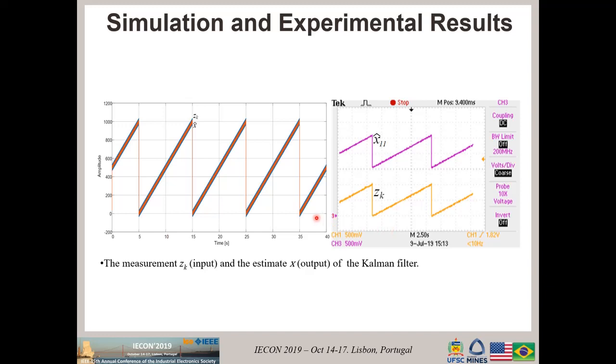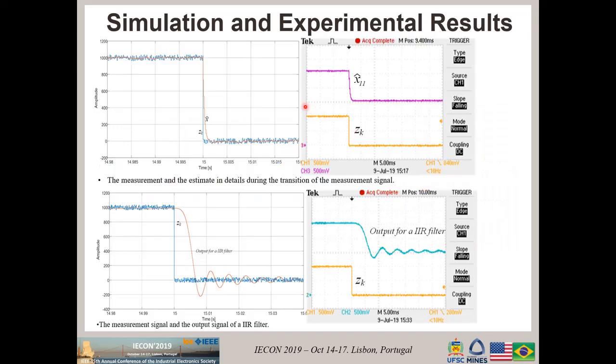These results side by side show the simulation and experimental results for the input, which is the measurement ZK, and the output, which is X hat for the matrix row 1, column 1. They are similar and coincident, superimposed, but the Kalman filter has a filtered version of the input. We can clearly see the adjustment I told you in the previous slide. Here we can see at the top a transition from the input signal and the output signal of the Kalman filter. It behaves very well, not oscillating, and here we see the same behavior for the experimental results.